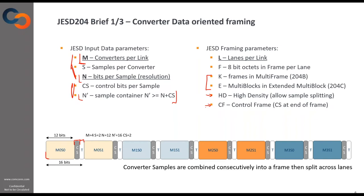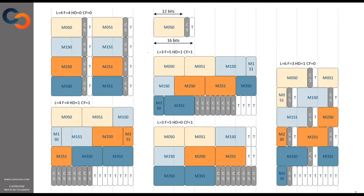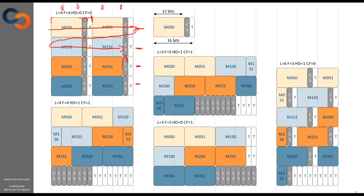Looking at framing examples: rows represent lanes and each column denotes an octet — 8 bits. In the first example with N=12, there are 12 bits of sample followed by two bits of control and two bits of padding to form a 16-bit container. JESD will take this data structure and split it across lanes, mapping data in one direction and then snaking through all lanes. So with four lanes and four octets per frame in non-high-density mode with no control word at the end, the data is placed accordingly.